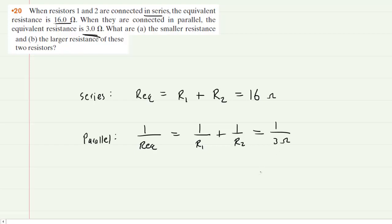So we can actually set this equal to 1 over 3 ohms. And our job, of course, is to find the individual resistance values R1 and R2.